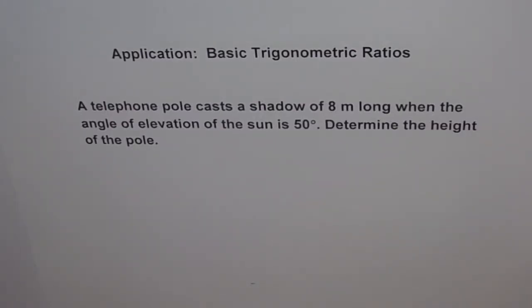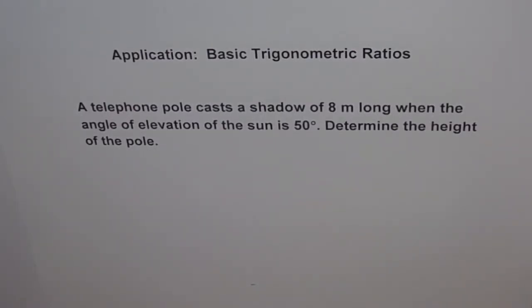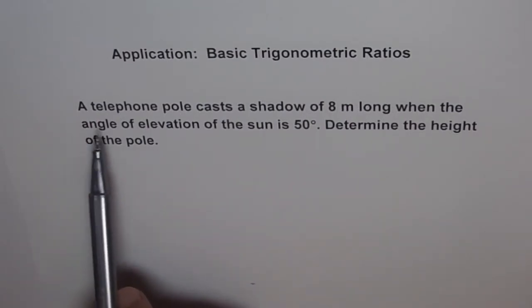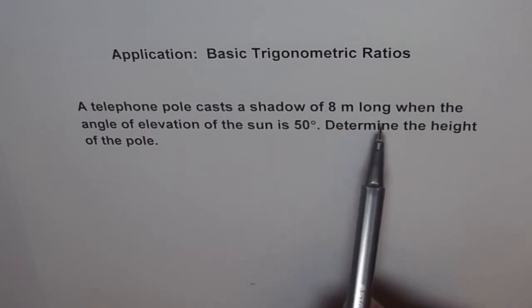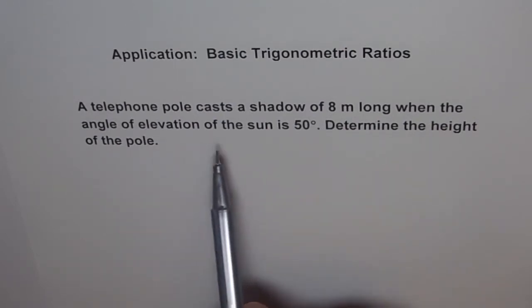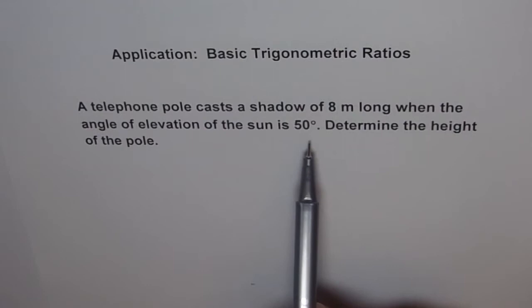Hello, here is a simple problem where we will use basic trigonometric ratios. A telephone pole casts a shadow of 8 meters long when the angle of elevation of the sun is 50 degrees. Determine the height of the pole.